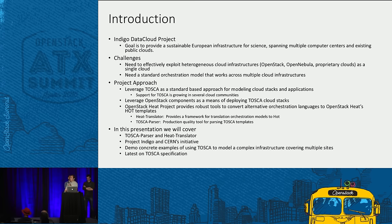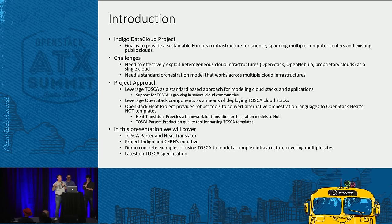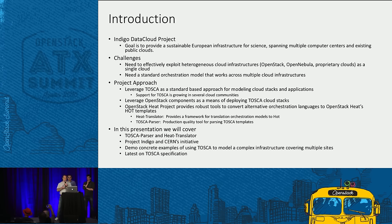At the last summit there were some interesting things going on — a big project at CERN called Indigo, aiming to build a European infrastructure spanning multiple clouds, some of them OpenStack and some not. So we're looking at heterogeneous cloud infrastructures and what can be done to exploit those.